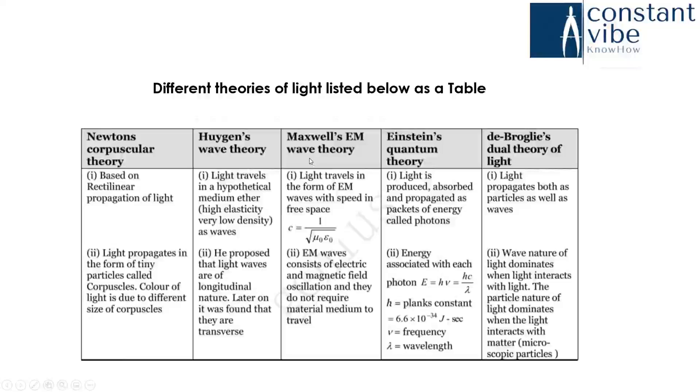Maxwell's EM wave theory is light travels in the form of electromagnetic waves with a speed in free space c equal to 1 by root of mu zero epsilon zero. Here, EM waves consist of electric and magnetic fields oscillation and they do not require material medium to travel. He explains there is no need of medium for this wave traveling.